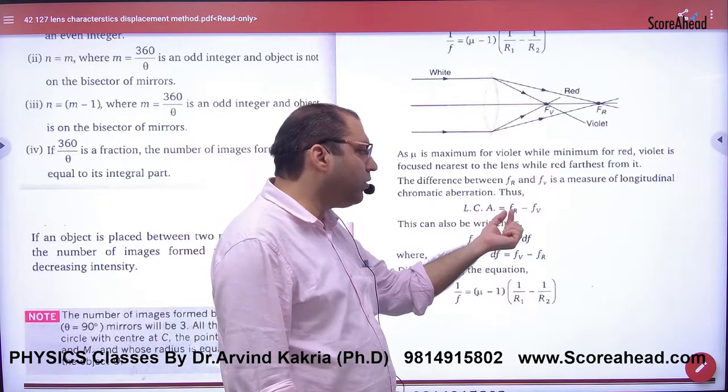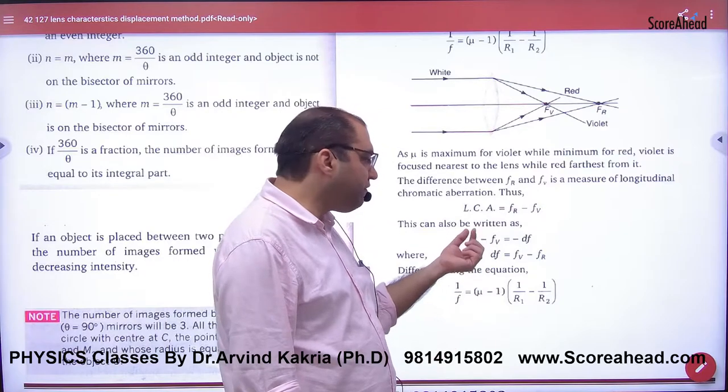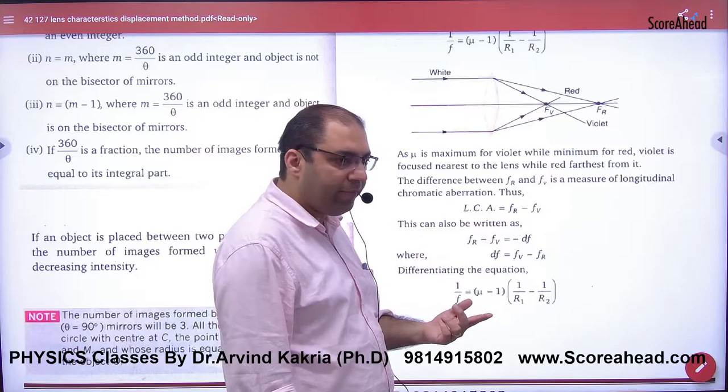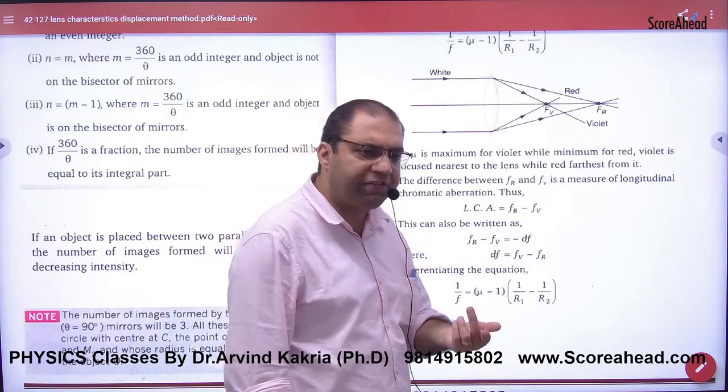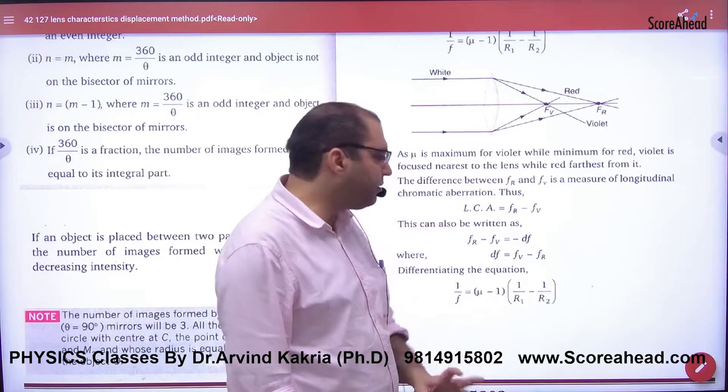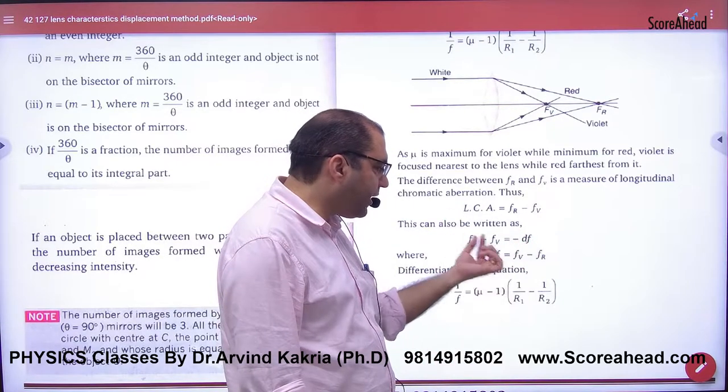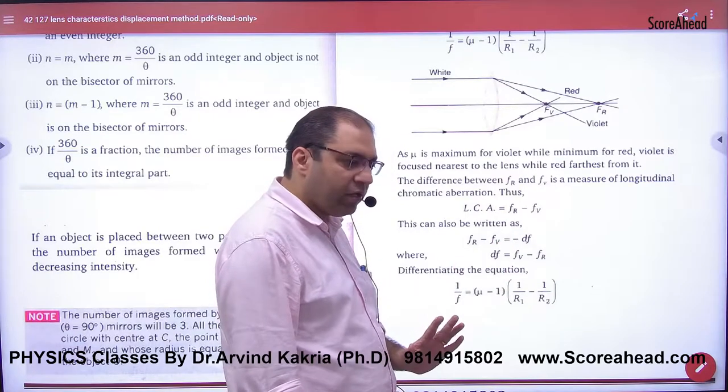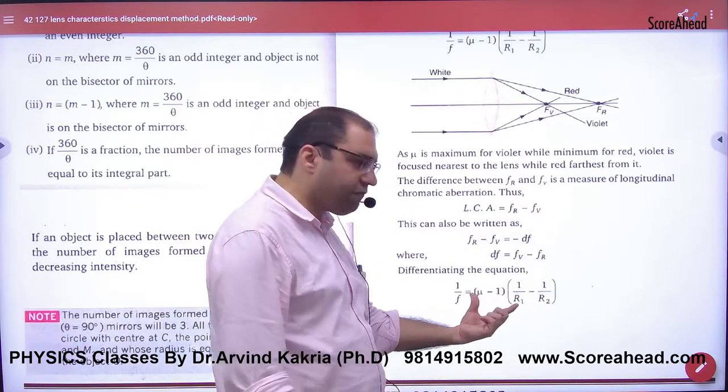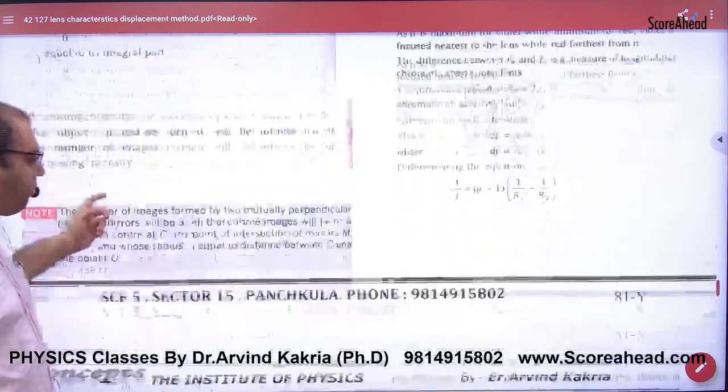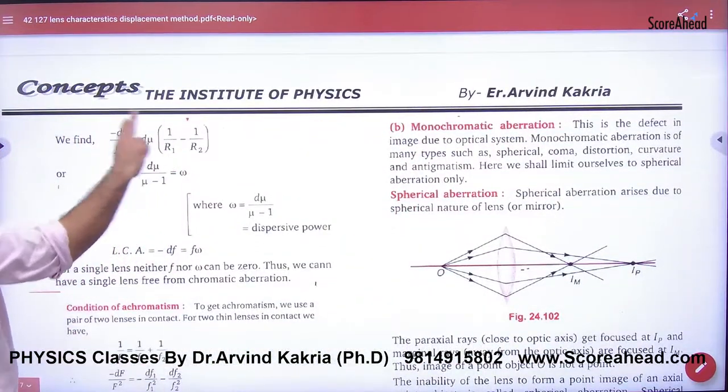LCA is defined as red focal length minus violet focal length, which equals minus df. So df value will be violet focal length minus red focal length. You put lens maker formula, differentiate it, and you will get this term.